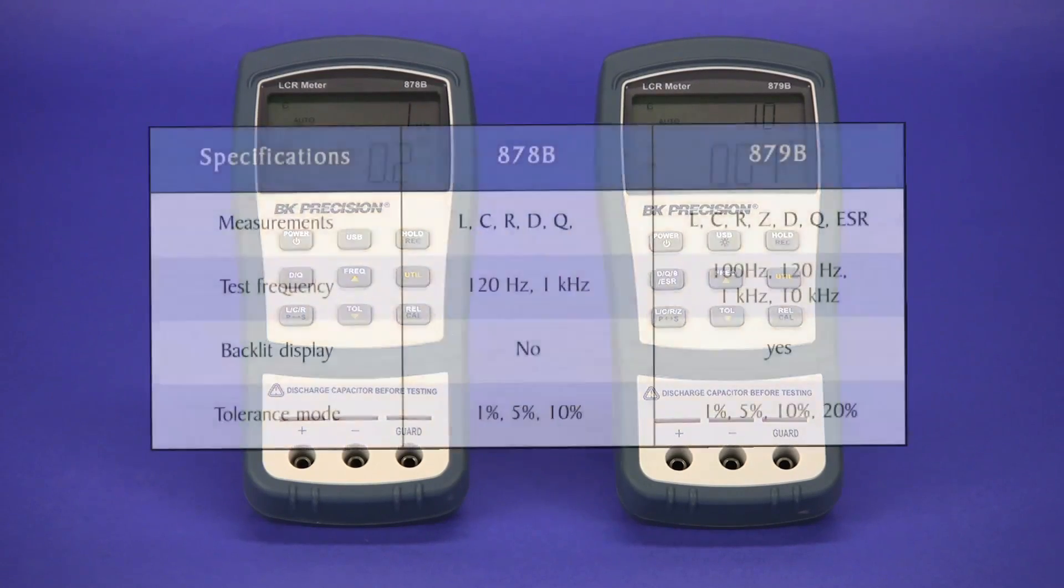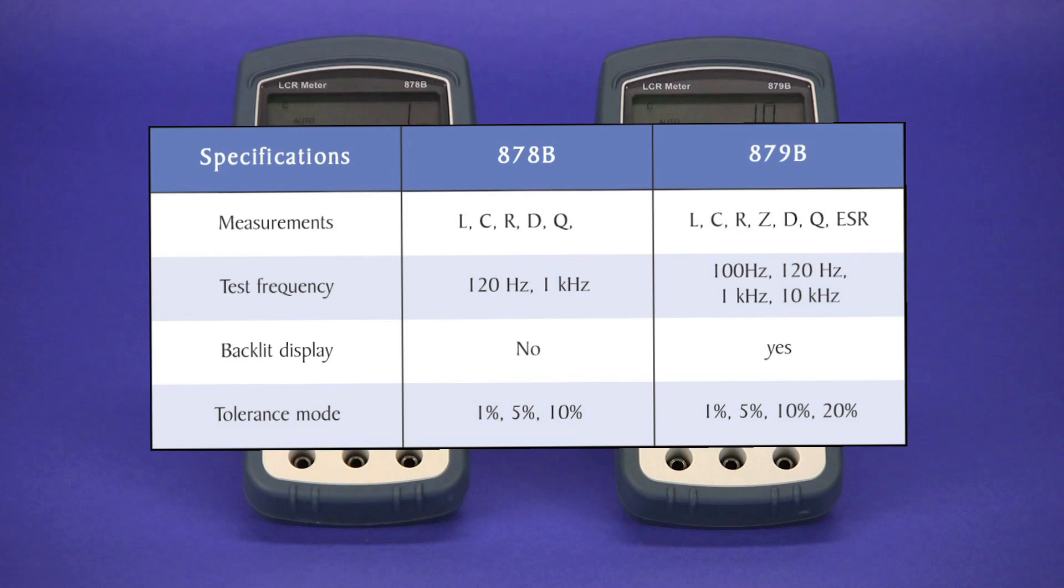The differences between the two meters can be seen here in this table. Not directly shown is that the 879B is able to measure a wider range of component values.